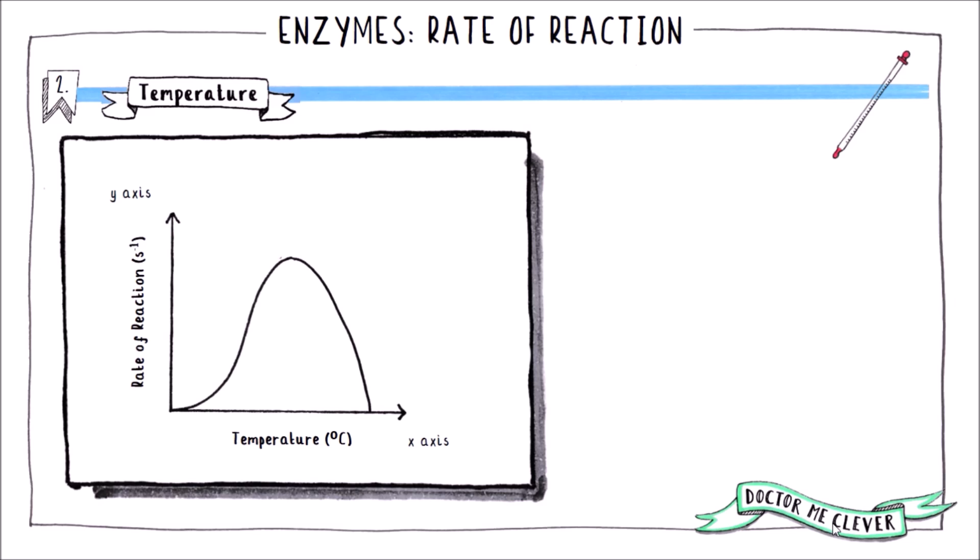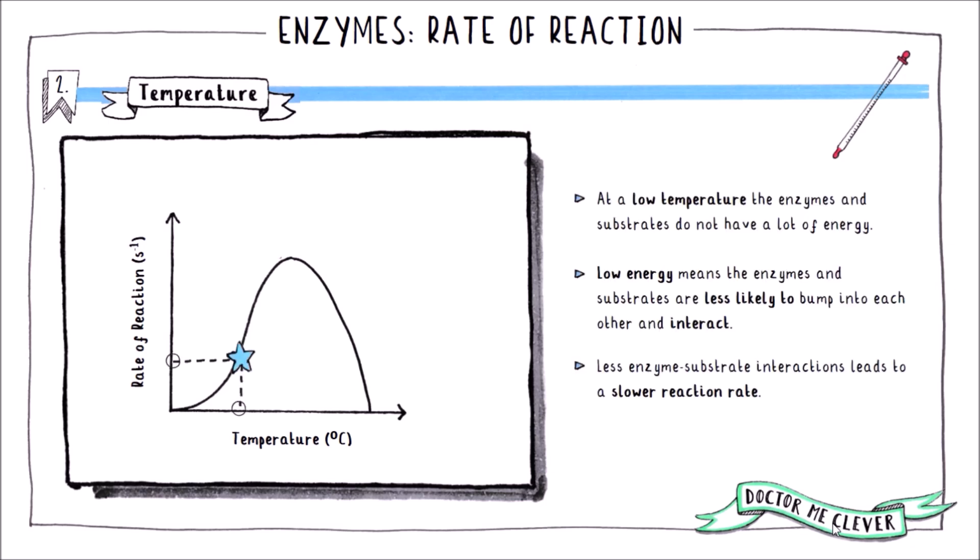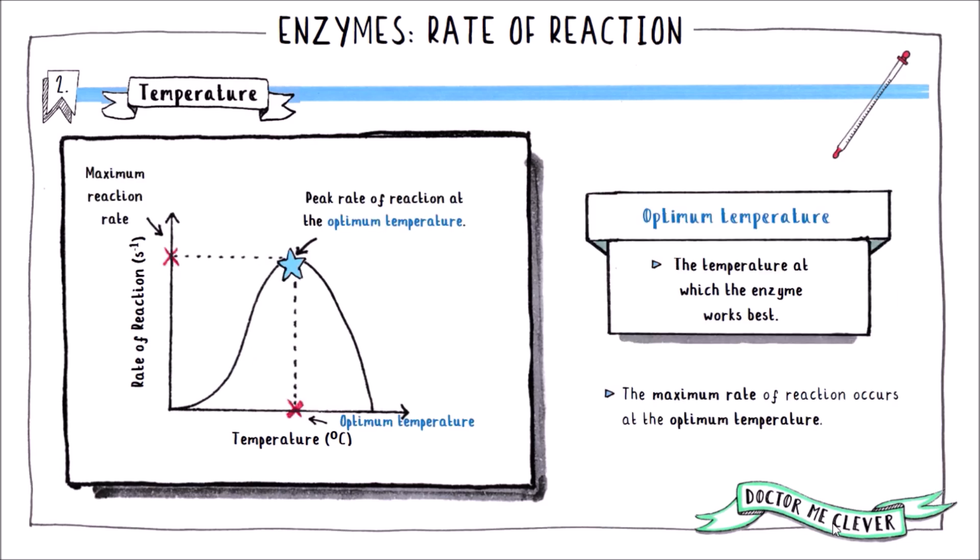The second variable that can affect enzyme activity is temperature. If we had several test tubes each containing the same concentrations of enzyme and substrate but each cooled or heated to a different temperature, the rate of reaction in each tube would be different. When temperature is low, the enzymes and substrate have very little energy and do not move around much, reducing the probability of collision. As temperature increases they have more energy, move around more, and there's a higher probability of contact and reaction. The maximum rate of reaction occurs at the enzyme's optimum temperature — for humans this is 37 degrees Celsius.